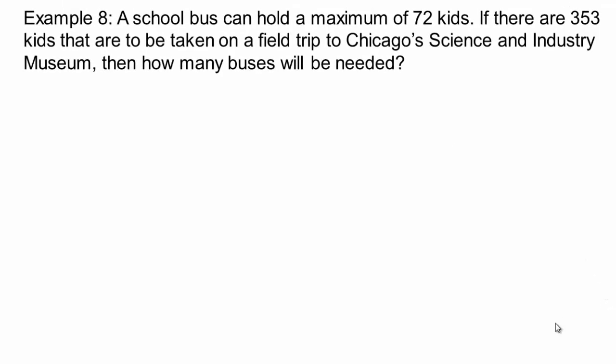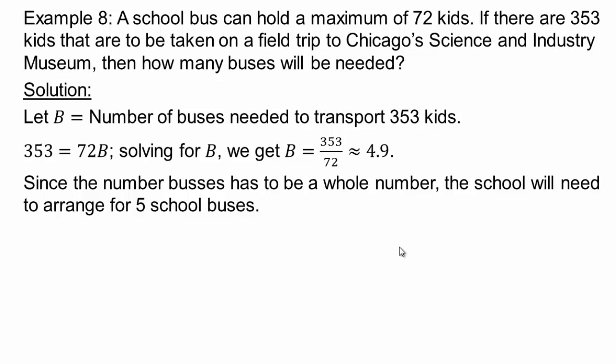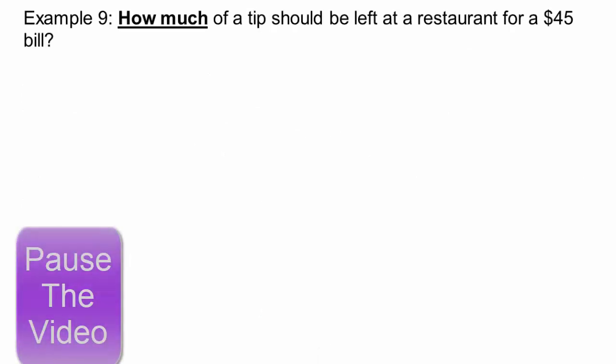Alright, let's try this problem. So again, let's say B is the number of buses we need to transport 353 kids. The maximum number of students in each bus is 72. So 72 times the number of buses should equal 353. Solve and you get 4.9. Now, can you have 4.9 buses? No, of course not. So that means what? You're going to have to need five buses. You need to have the next complete whole number because number of buses is going to be a whole number.